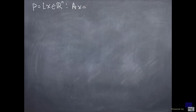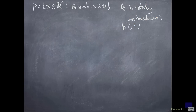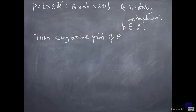Consider the set P of x in R^N such that Ax equals b, x is greater than or equal to 0, and A is totally unimodular, and b is an integer vector. Then what we can show is every extreme point of P, provided P is not empty, has only integer entries.